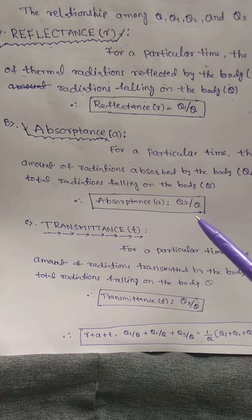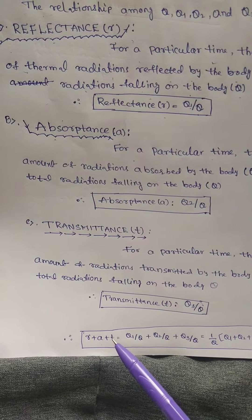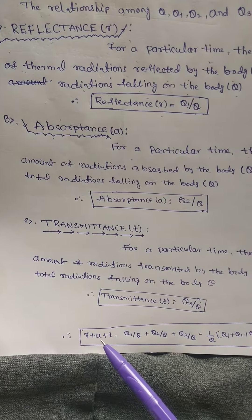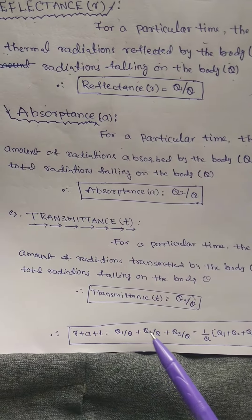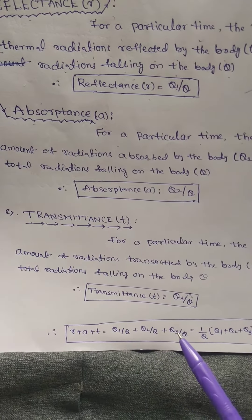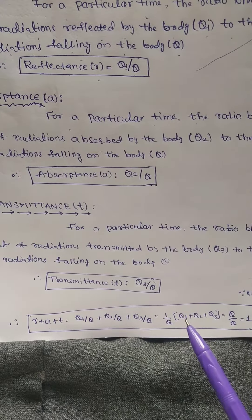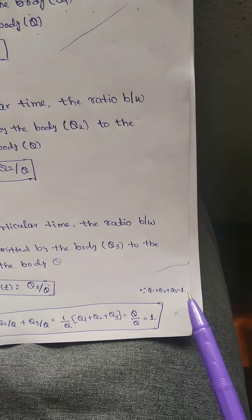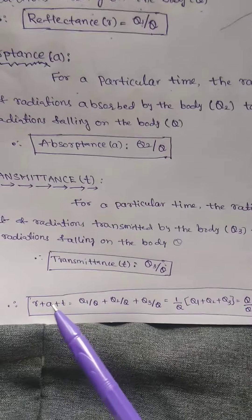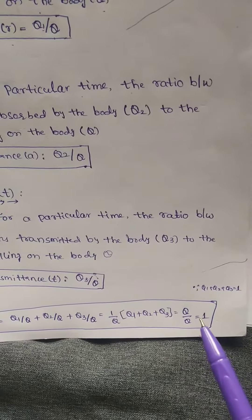In all three definitions, Q is common. Therefore, from the three definitions: R + A + T = Q1/Q + Q2/Q + Q3/Q. Since Q is common, this equals (Q1 + Q2 + Q3)/Q. Since Q1 + Q2 + Q3 = Q, the summation of all three factors equals 1. Therefore, R + A + T = 1. This is the relationship.